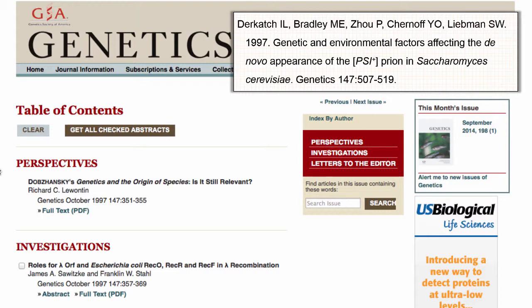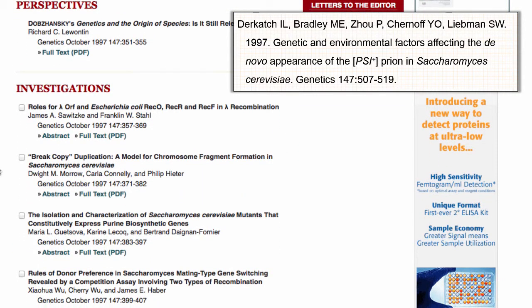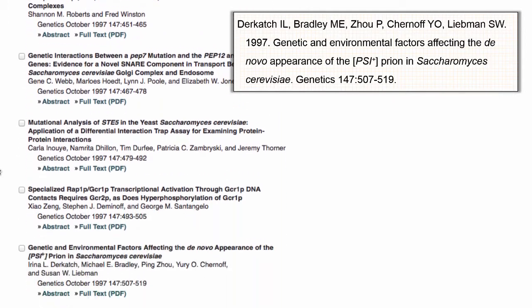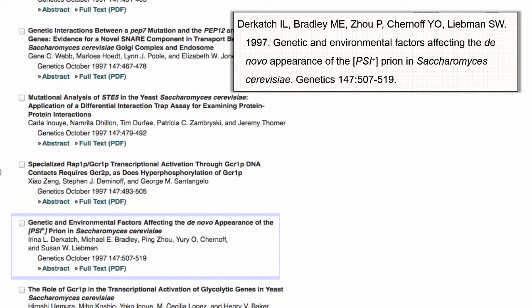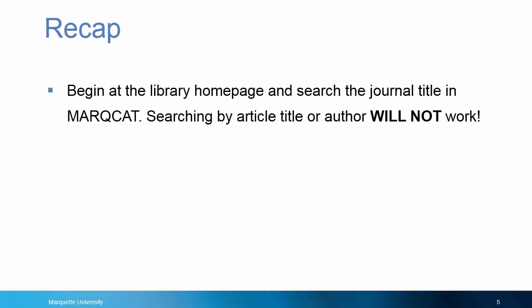From here, we can scroll through the contents of the issue looking for the article title. We can then access the full text as a PDF. To recap, begin at the library homepage by searching for the journal title in Marquette, the library's catalog. Searching by article title or author will not work.